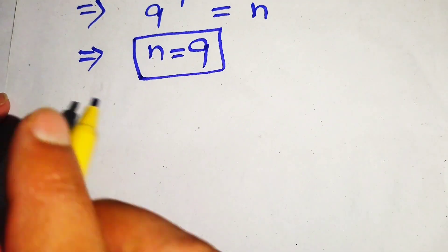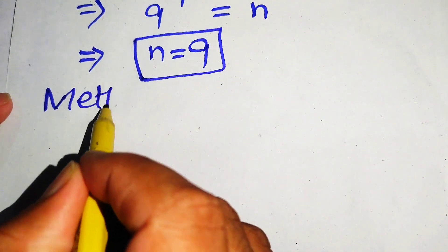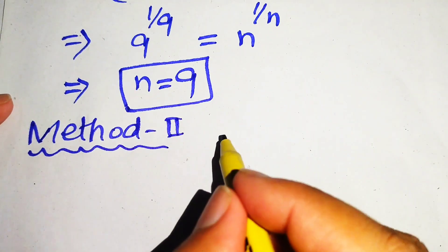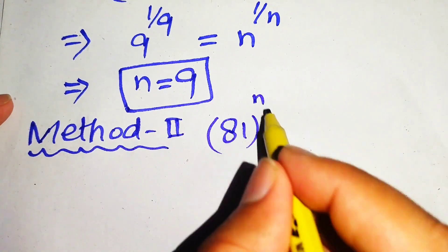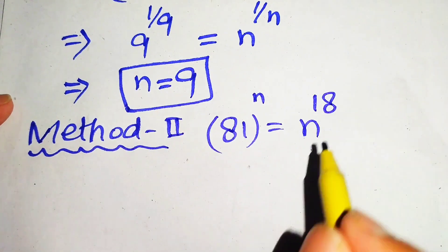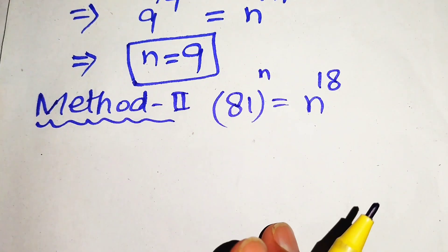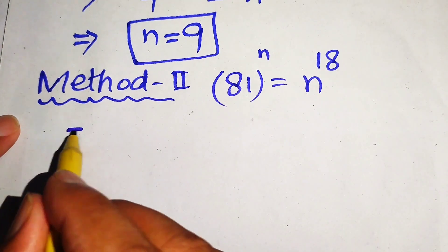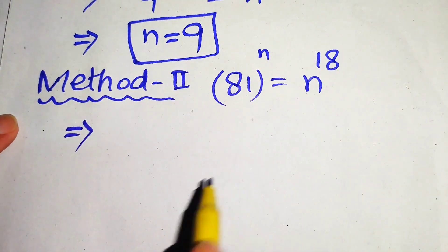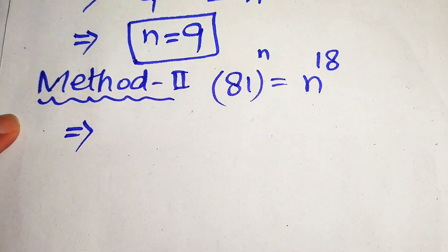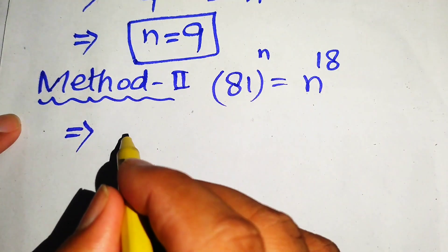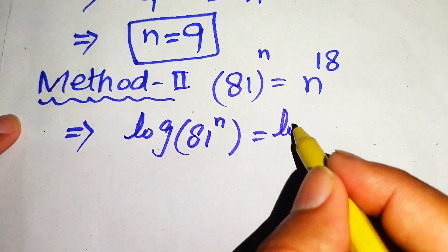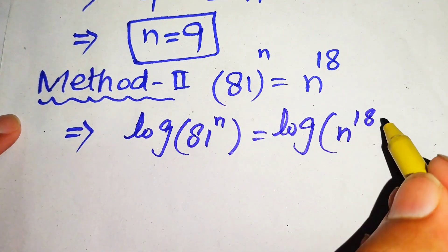Now we solve this question using method number 2. We copy down the question statement: 81 to the power of n equals n to the power of 18. In method number 2, we take the common log on both sides of this equation, giving us log of 81 to the power of n equals log of n to the power of 18.